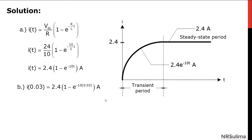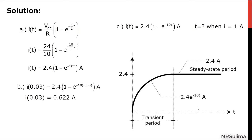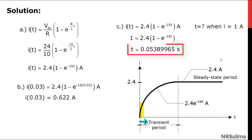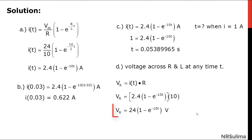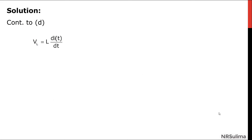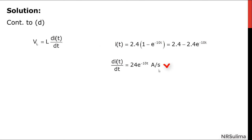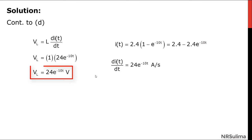For letter B, using the same current equation at time equal to 0.03 second, the value of the current should be around 0.6 ampere. For letter C, the time required for the current to reach 1 ampere is equivalent to 0.054 second. To calculate the voltage across R and L at any time t: the voltage across the resistor is 24 times the quantity 1 minus exponential negative 10t volts. For the voltage across the inductor, taking the first derivative of the current with respect to time gives 24 exponential negative 10t volts.